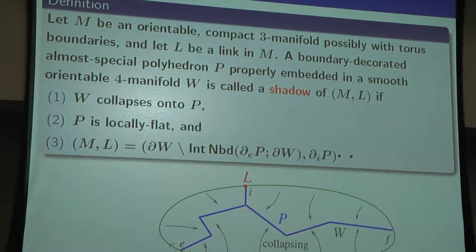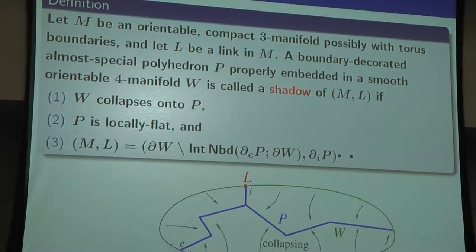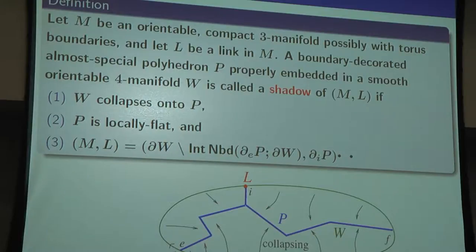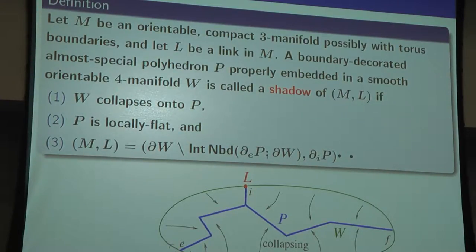Now, the definition of shadow. Let M be an orientable compact three-manifold, possibly with torus boundaries, and L a link in M. Then a boundary-decorated almost special polyhedron P, properly embedded in a smooth orientable four-dimensional manifold W, is called a shadow if it satisfies three conditions. The first condition is that W collapses onto P — W is a four-dimensional manifold and P is a two-dimensional object embedded in W, with a retraction to P.